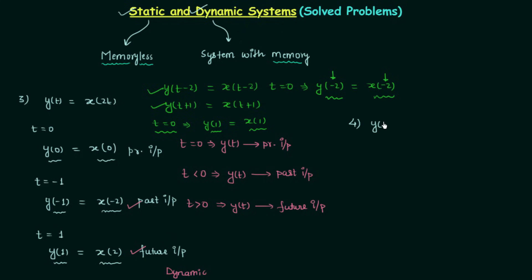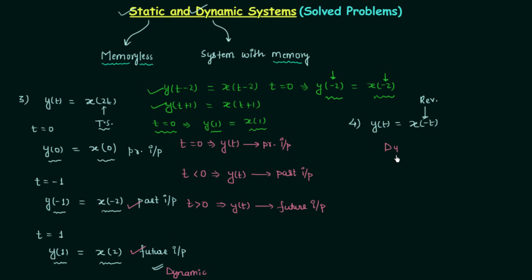In the fourth problem, y(t) = x(−t). There is no need to perform all the calculations because we have derived a property: whenever there is time scaling, the system is going to be dynamic in nature. Here we have time reversal, and reversal is nothing but a special case of time scaling. So we can directly say the system is dynamic.